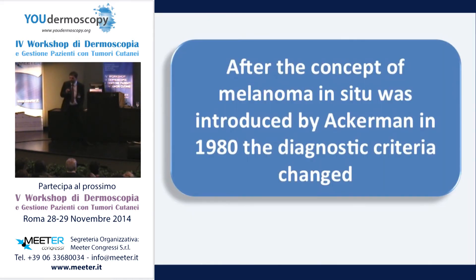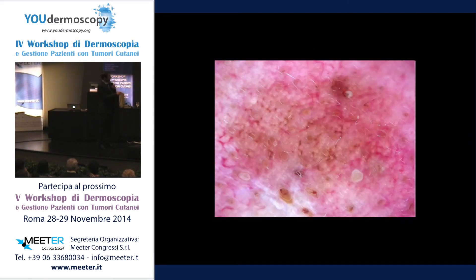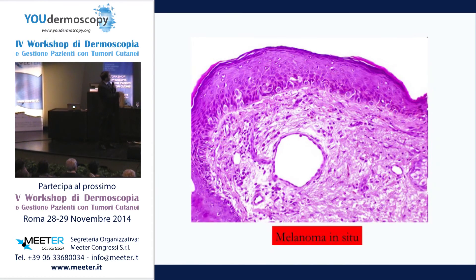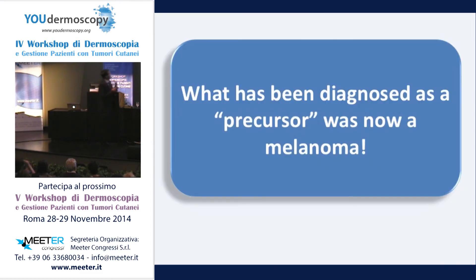When Ackermann introduced the concept of melanoma in situ in 1980, everything changed. We learned to diagnose melanoma in situ and early melanoma clinically, dermatoscopically later, and also pathologically. This lesion — dermatoscopically it doesn't look very bad, but the gray circles suggest lentigo maligna. Histopathologically, single melanocytes are visible and every histopathologist will diagnose this as melanoma in situ. So this was the period where we diagnosed melanoma early and just right — not overdiagnosis, just right.